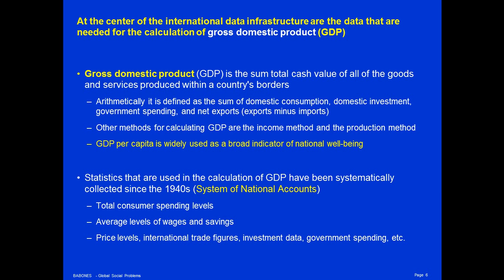Those countries are much better off than countries with less than $1,000 GDP per capita, like many Sub-Saharan African countries. When you're thinking about very broad categories—a country's GDP per capita is 10 times as large as in other countries—it's certainly a very useful indicator of well-being. On the other hand, when you try to compare countries at a very fine level, a GDP per capita of $40,000 versus $44,000, that starts to become much less meaningful because GDP doesn't really capture exactly what we mean by well-being.